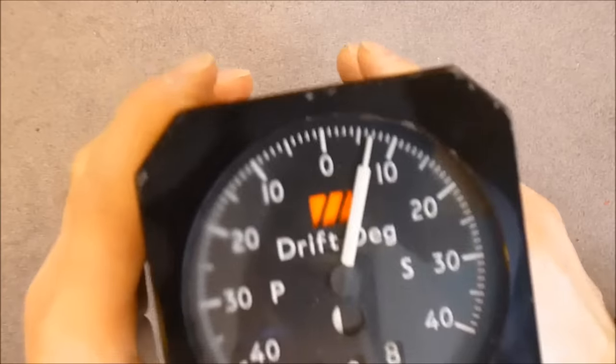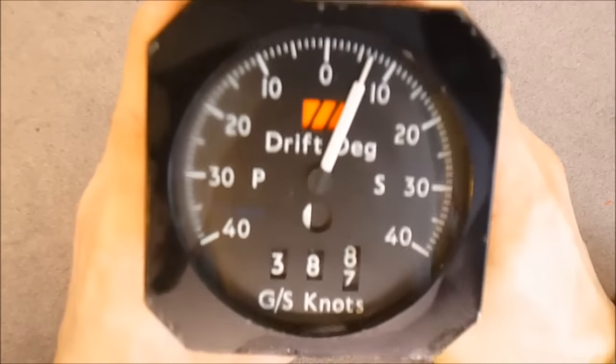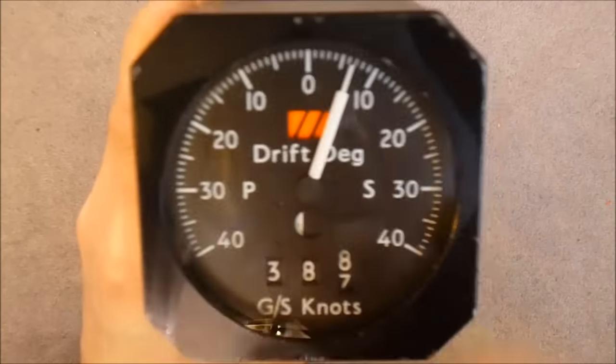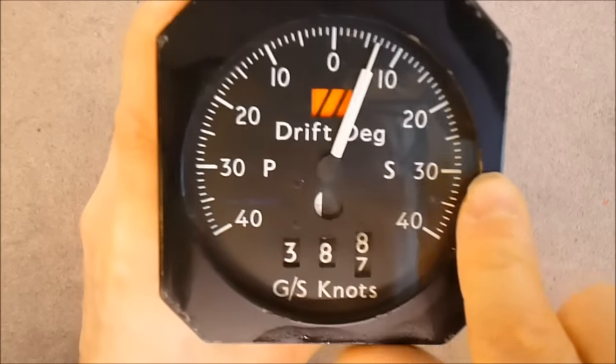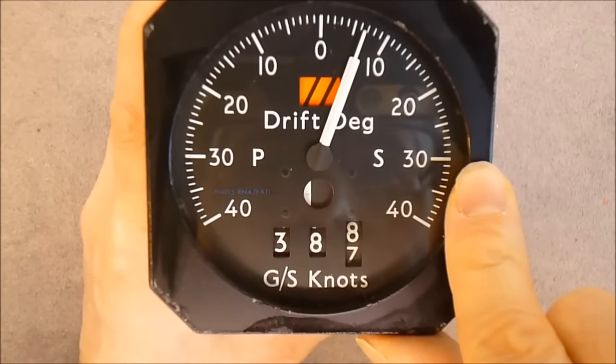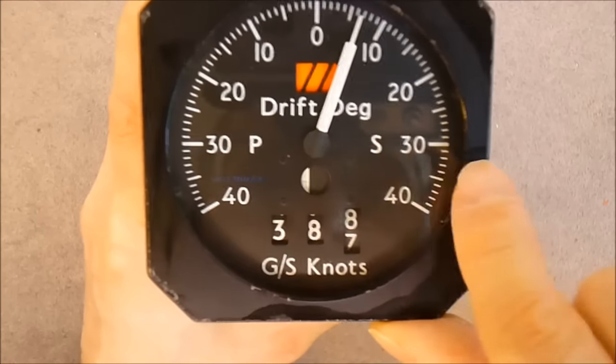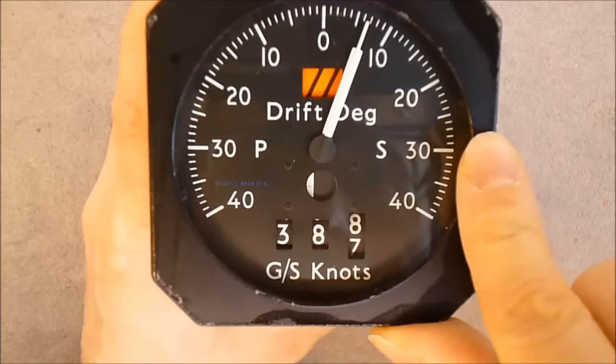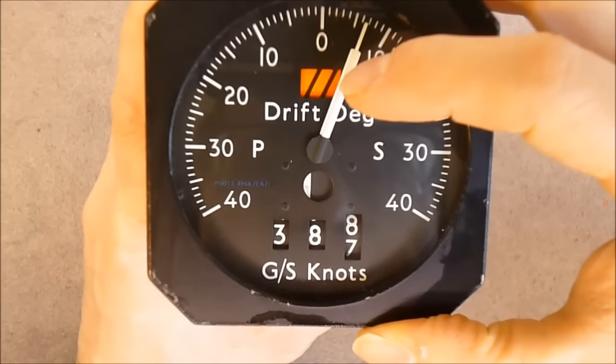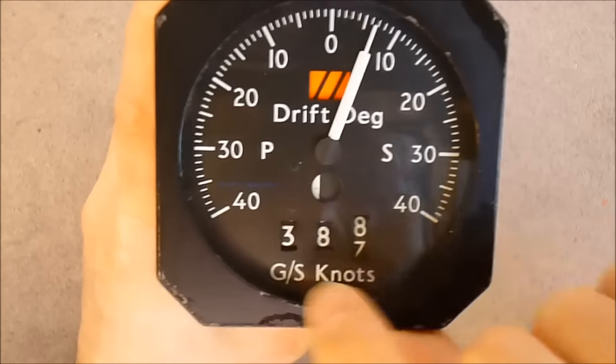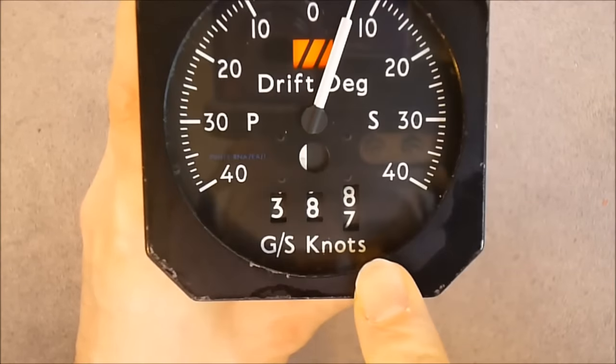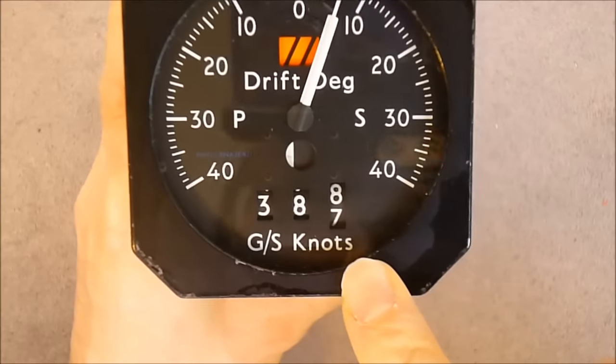So here is what it looks like on the front panel. We have one needle indicator indicating some drift degrees angle, either P or S. I have no clue what it does. We have a warning flag at the top, some other thing here in the hole, and here the counter for the ground speed knots.